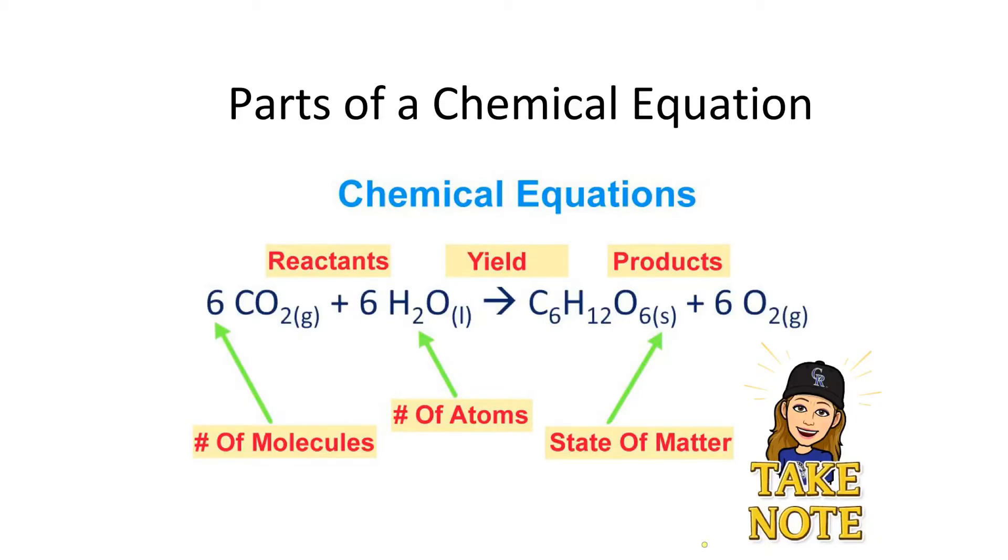And we've done a little bit of this in our previous unit talking about the number of each atom when making our Lewis structures. And then the S's, or the G's, or the L, or you can also see an AQ for aqueous, means it was dissolved or dissociated in water. Those are the states of matter. So sometimes you'll see chemical equations represented with them, and sometimes you will not.